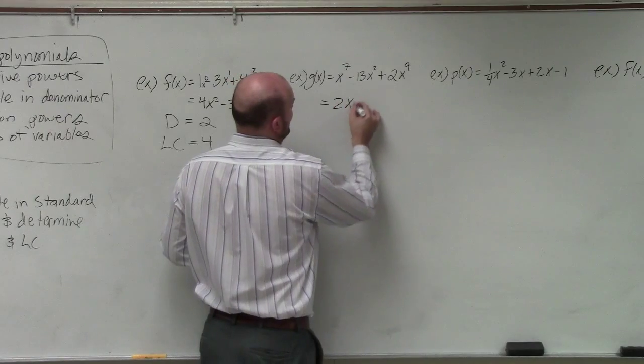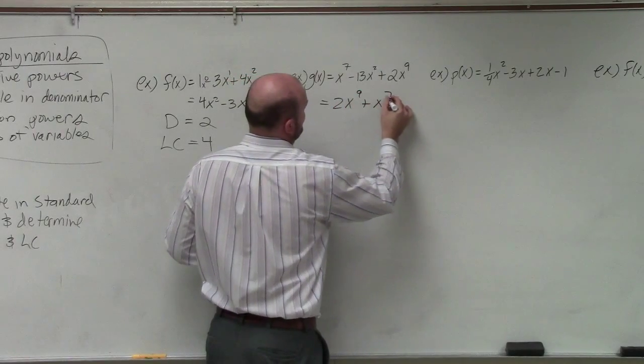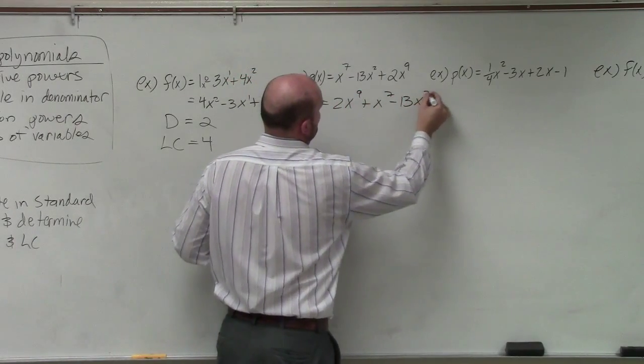So therefore, I just write this as 2x to the 9th plus x to the 7th minus 13x squared.